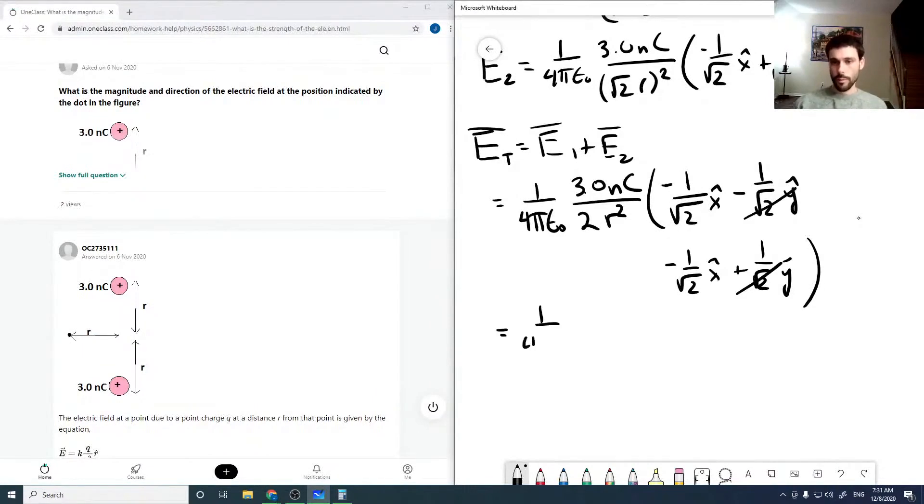So 1 over 4 pi epsilon naught, 3 nanocoulombs over 2 r squared. And then we'll get a minus 2 over root 2 x hat. Go ahead and cancel this 2. We could probably pull out some more numbers, but since everything's still in r, I'm just going to leave most of it.